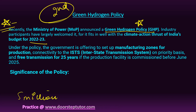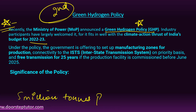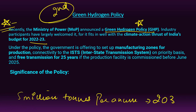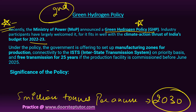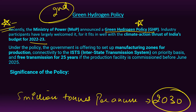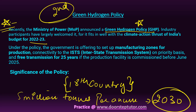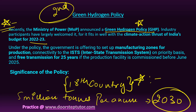This policy has set a target of 5 million tons per annum for green hydrogen production by the year 2030 — more than 80 percent of the current hydrogen demand in the country. It is a watershed moment in India's energy transition journey. India has become the 18th country in the world to release a comprehensive green hydrogen policy.